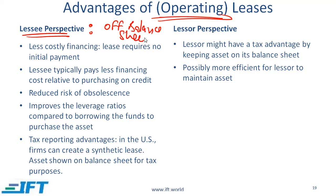What does this mean? One way of getting an asset is to pay for it. When you pay for an asset using credit, you build a liability on your balance sheet and you also show an asset on your balance sheet. When you show an asset on your balance sheet, what happens to ratios such as return on assets? Those ratios become worse because if your asset is going up, then return on assets is going to come down.